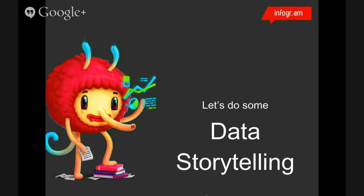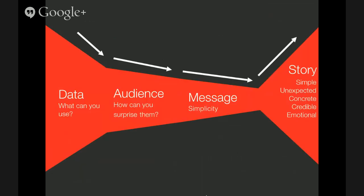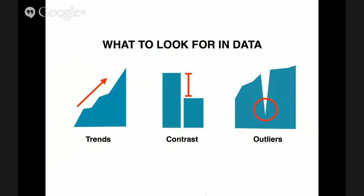Let me share some basic essentials of data storytelling. Summarizing it, the process goes from data to story. If we start with data, there are three core things we can look into. When we are working on an Excel sheet and creating draft charts, we can look for trends, for contrast, or for outliers. That's the first point where the story can emerge.